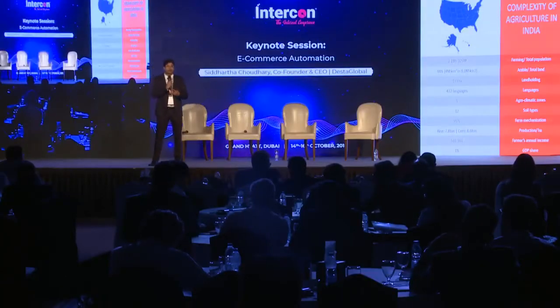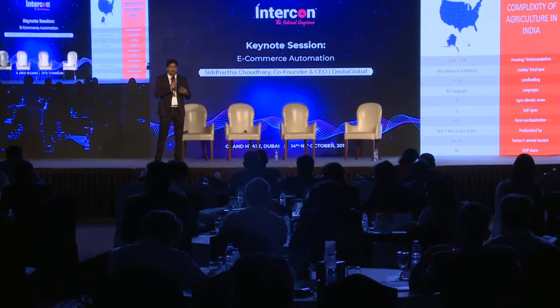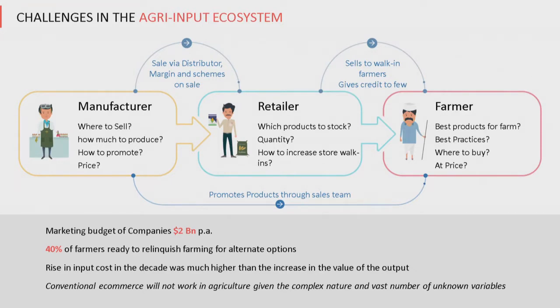Destor Global was started with the objective of helping farmers — using technology to solve these challenges. The agriculture distribution chain in India is very similar to urban: there is a company, there are distributors, there is a retailer, and then the customer, who in this case is the farmer. Technology is not really well understood in rural segments of India, though smartphones are increasingly used in villages.